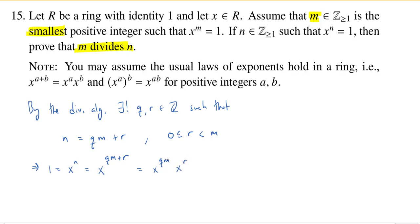And now I'm going to rewrite this so that the m comes first, and using this exponent law, rewrite it as x to the m to the q times x to the r. And the reason I do that is because I know that x to the m is equal to 1.